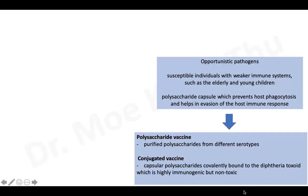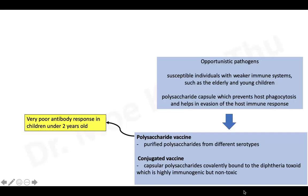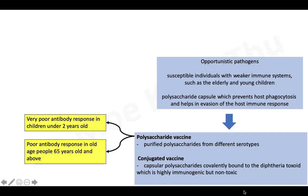The problem is that if you give polysaccharide vaccine to children under 2 years old, the immune response is very poor — children don't produce antibodies to prevent infection. Similarly, if you give polysaccharide vaccine to people 65 years and older, antibody response won't last long. You can detect antibody levels for only a short period of time, and it disappears soon. For healthy young adults, you can detect antibodies for up to 5 years in some cases, but levels can decline very fast if they have certain underlying diseases.